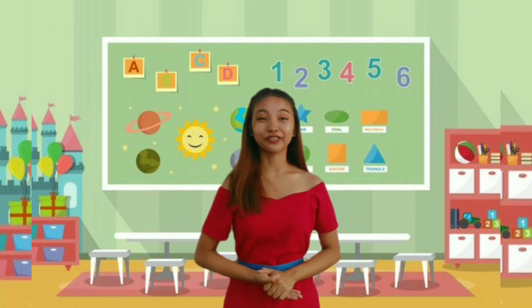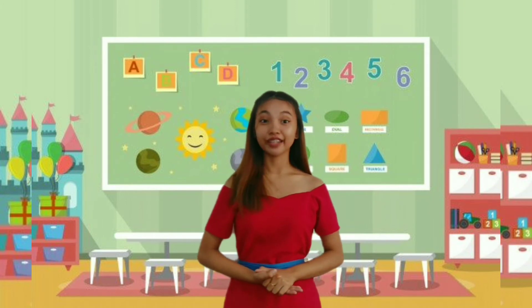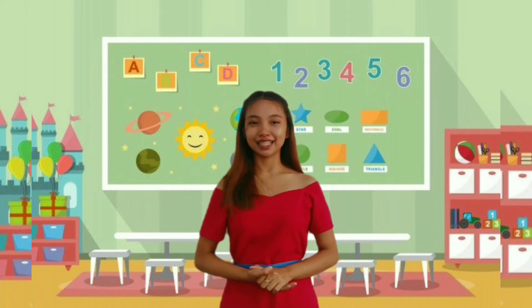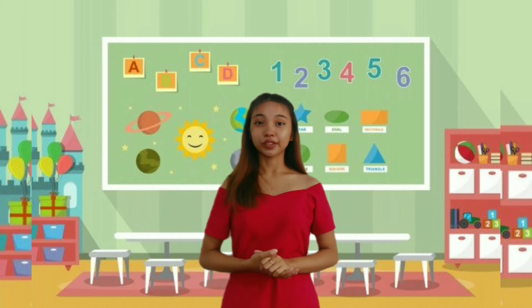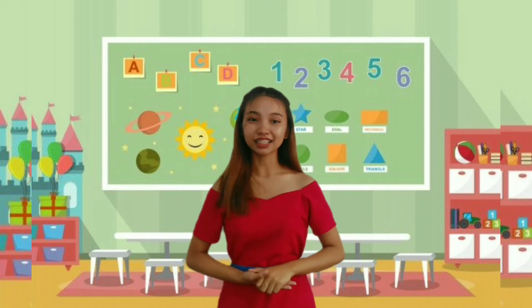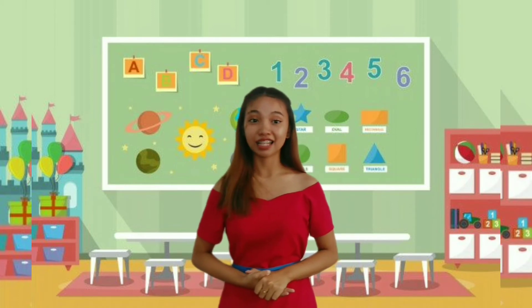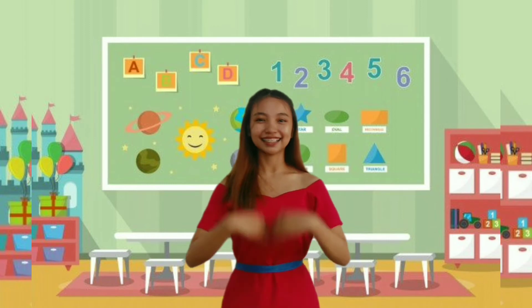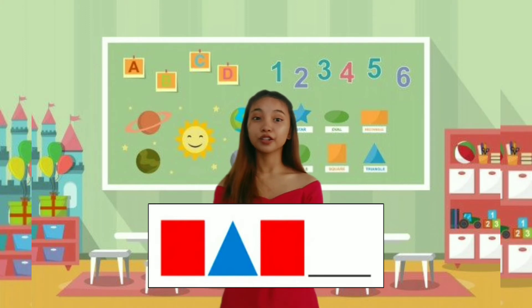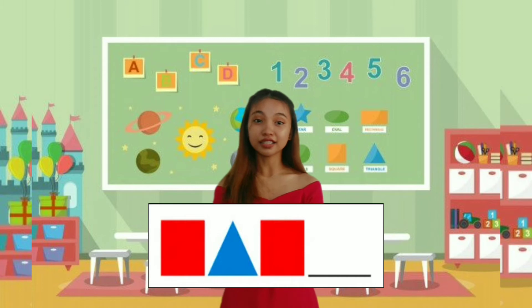Okay class, to find a pattern, you need to identify the sequence of shapes, colors, fruits, and objects that is being repeated. For example, to complete a shape pattern, you need to look at the last shape known and then add the next shape in the sequence. Just like this — the first shape is square and the next shape is triangle, to be followed by square again, and it should be followed by a triangle. So the answer is triangle.